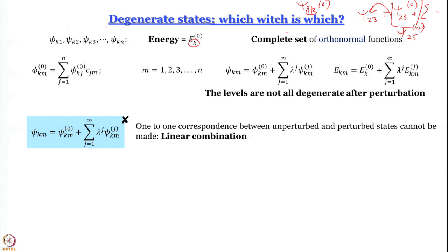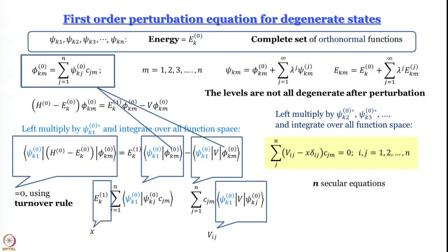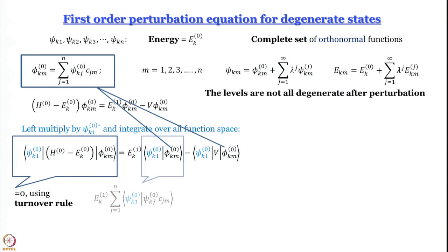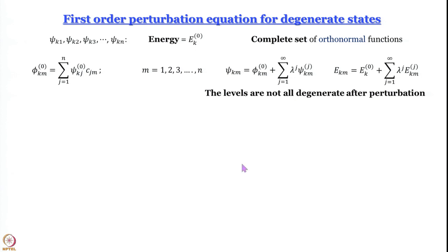With this linear combination approach, we get n expressions for the correction to energy, giving n wave functions which may or may not have the same energy. They will remain degenerate if all energy levels are increased or decreased by an equal amount; they will no longer be degenerate if different levels are affected to different extents. We will examine both kinds of systems, but first let us work out the first-order perturbation equation for degenerate states.